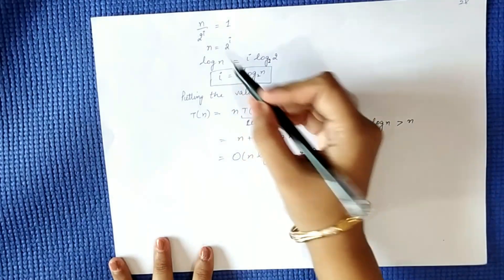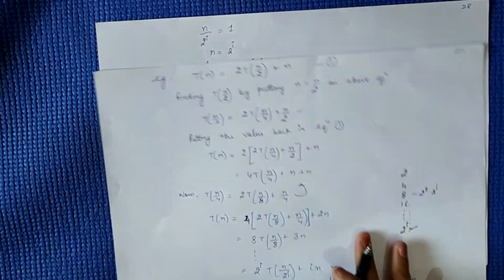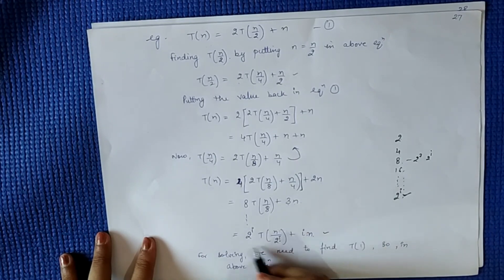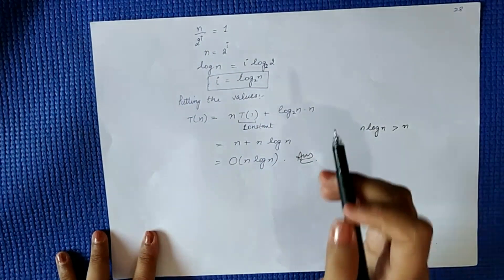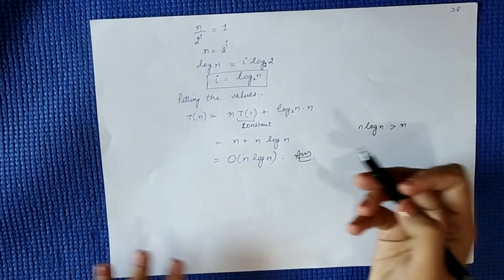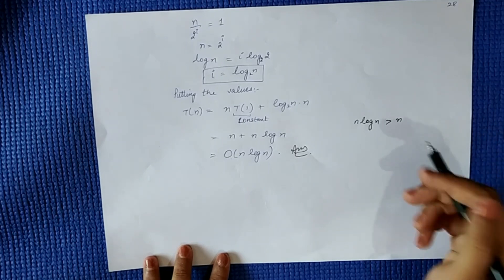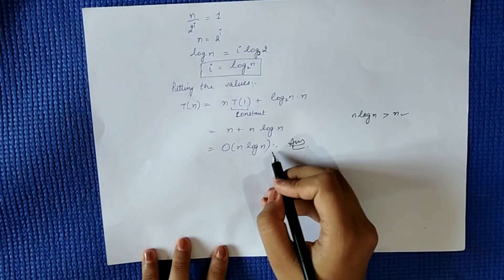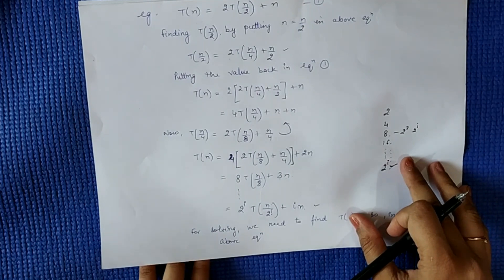Now substituting back: 2^i = n, T(1) is a constant, and i = log n. So we get n·T(1) + log(n)·n. Since T(1) is constant, we compare n·log(n) vs n: n·log(n) is greater than n. So the complexity is O(n log n). We had solved this same function using the substitution method and got O(n log n), and now with the iteration method we also get O(n log n). Both methods give the same answer.